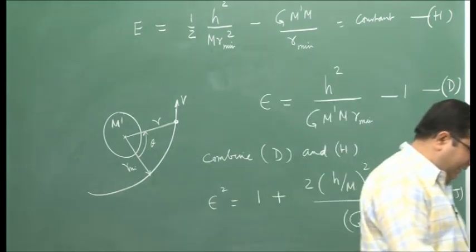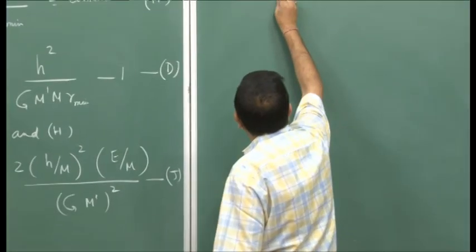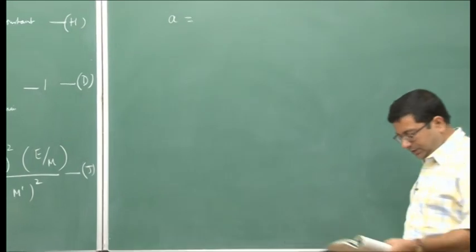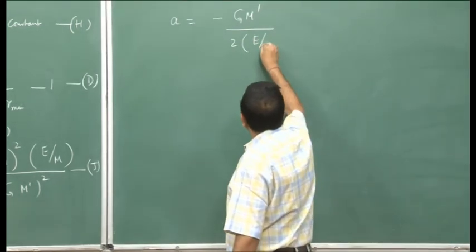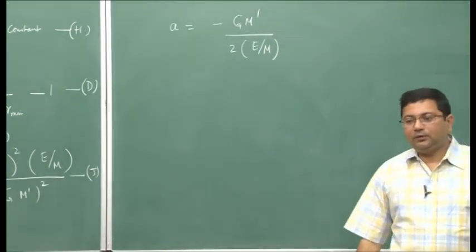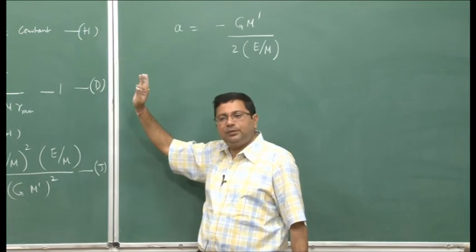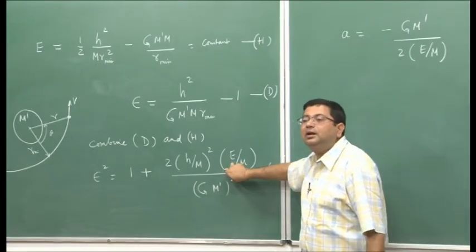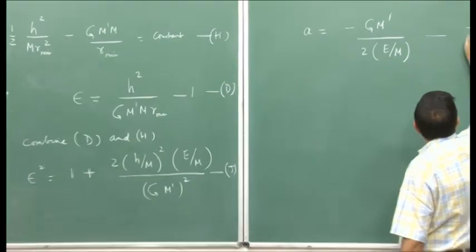We also obtained an expression for A, which appears in the conic section expression in terms of epsilon. Substituting that back, I get an expression for A in terms of orbital parameters as: A equals minus G M-dash divided by 2, divided by (E/m). Earlier we had expressions for A and epsilon in terms of r-min and other parameters; now I am combining them to bring in the energy content as well.